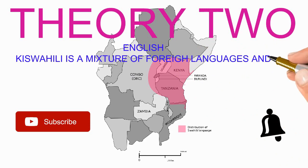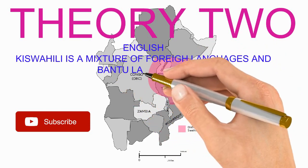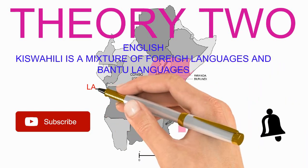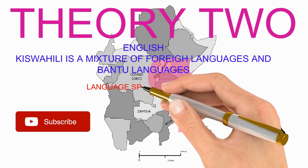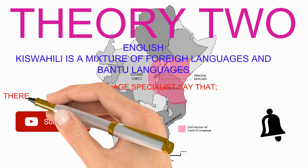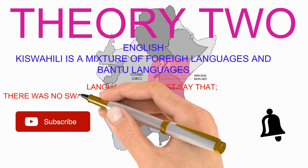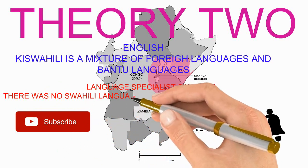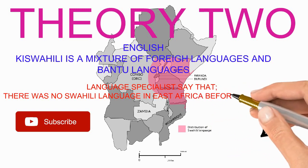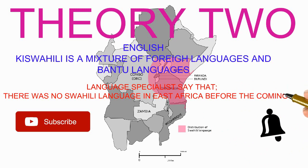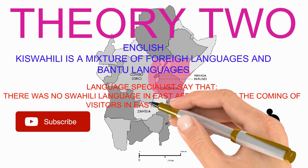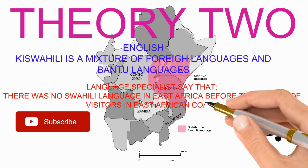This theory states that Kiswahili is a mixture of African language and foreign languages. The people who hold this statement say that there was no Kiswahili language in the East African coast before the coming of early visitors. They say that Kiswahili came up as a need — a language to communicate between African people and the foreigners who came to the East African coast.